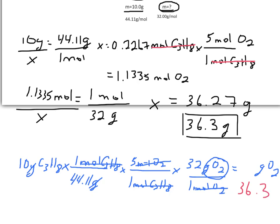Looking back at this question: step one was the balanced chemical equation, step two was finding the moles of my known, step three was finding the moles of my unknown, and step four was finding my question mark. If you understood that example, try some problems. Otherwise, I'm going to do another example on the next slide.